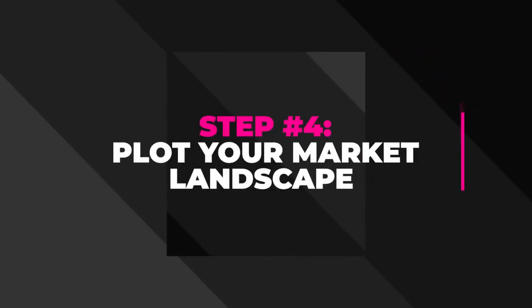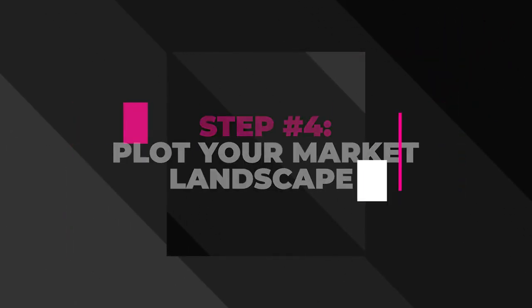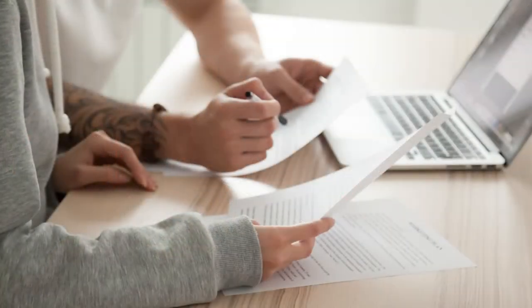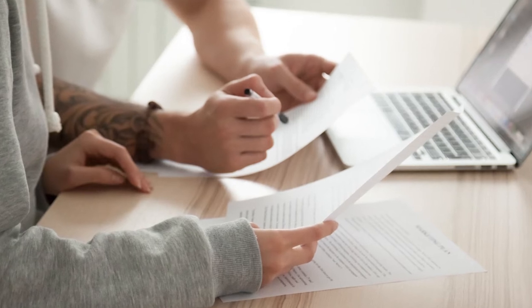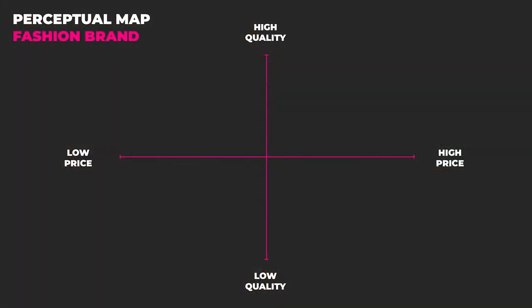Step number four: plot your market landscape. Once you have your variables scored for each of your competitors, mix and match the combinations across multiple maps. For example, if you've identified price and quality as important variables, you can use price on the Y axis and quality on the X axis. The more variables you use, the more combinations there will be and the more maps you'll need.